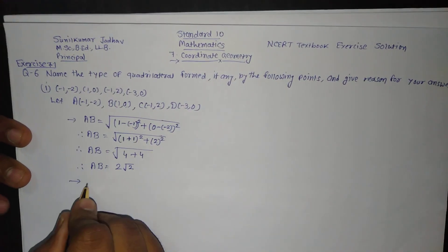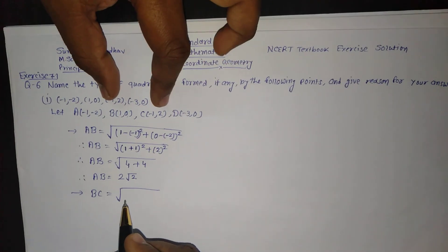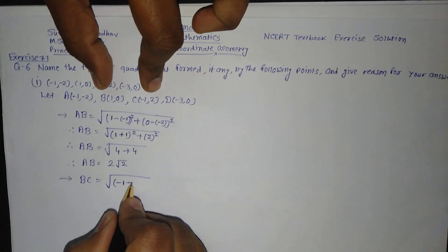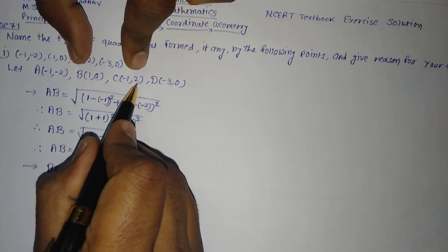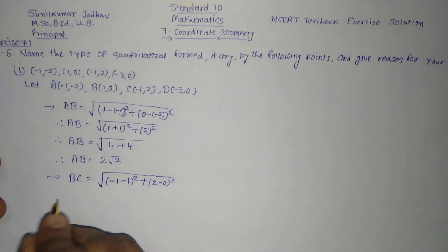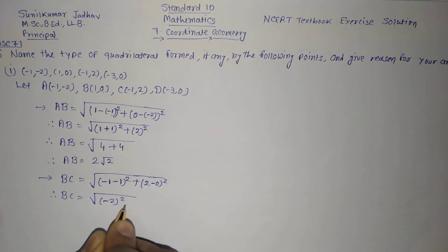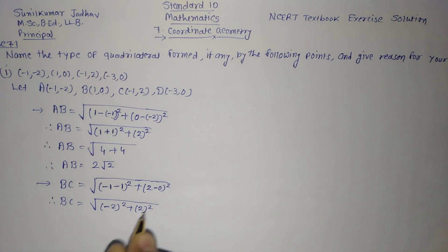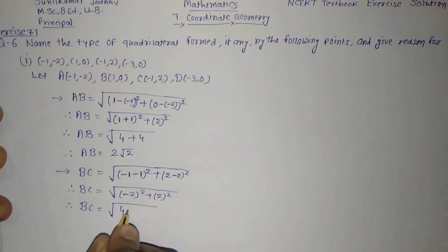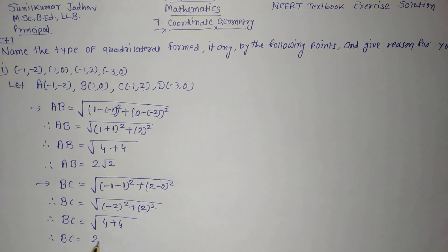Next we will find the distance BC. Using the distance formula with B = (1, 0) and C = (-1, 2): BC = √((-1 - 1)² + (2 - 0)²) = √((-2)² + (2)²) = √(4 + 4). Therefore BC is also equal to 2√2.